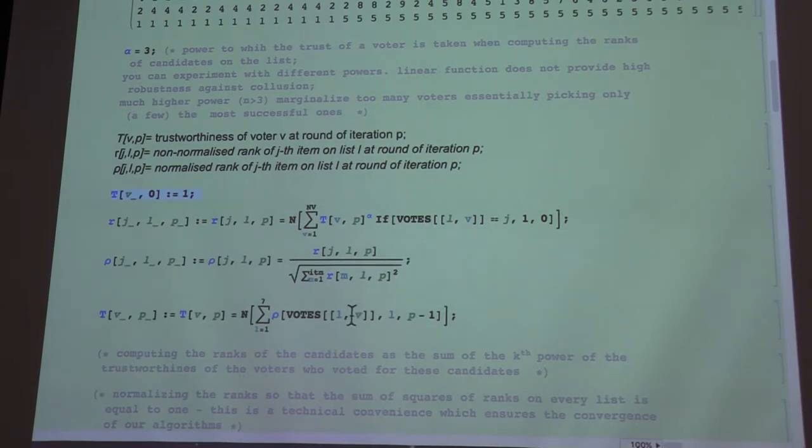so l is now the variable of summation across all lists. We sum up the ranks of items so that the voter v has voted for. So if you fix v, you will get one column here